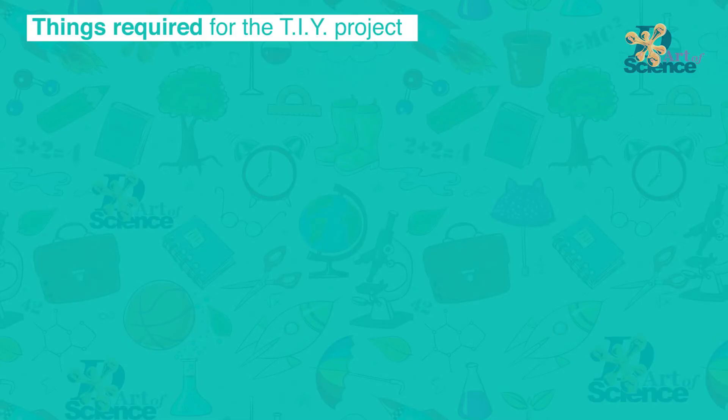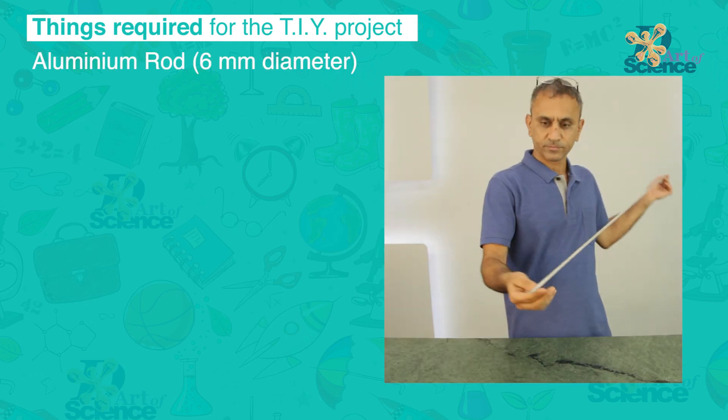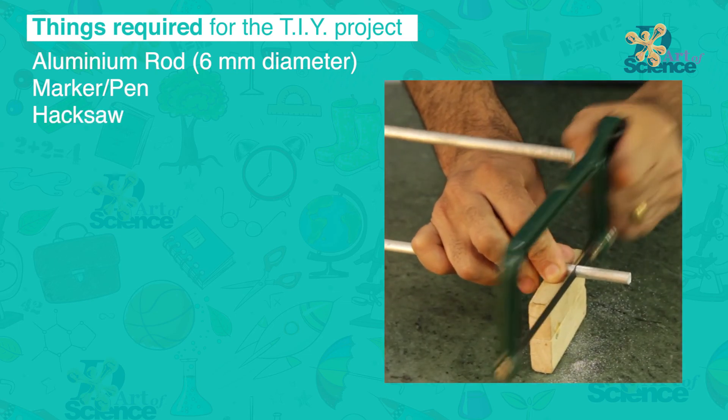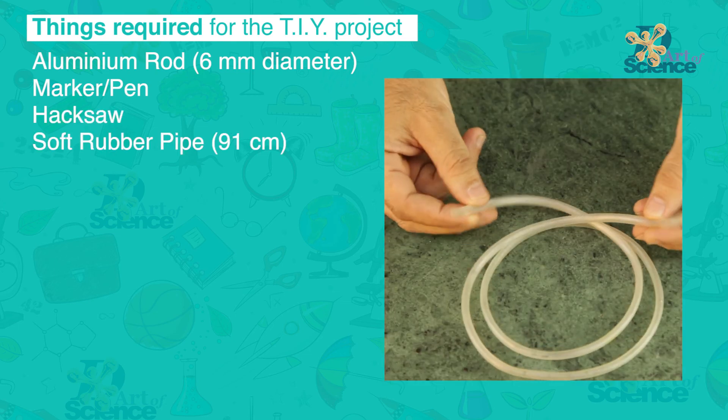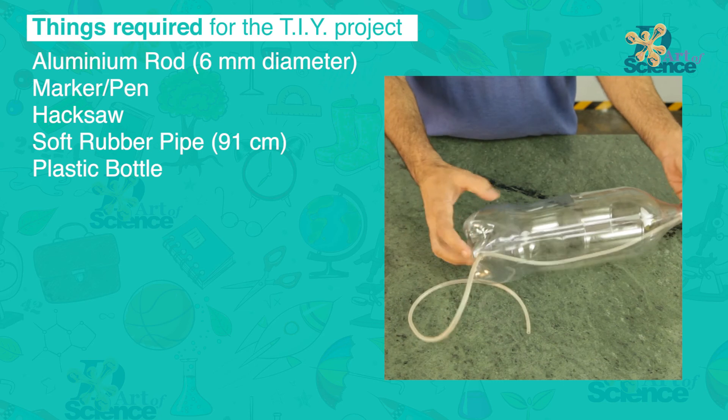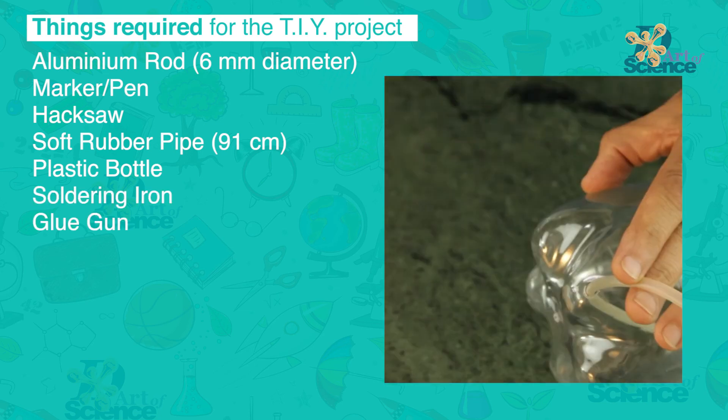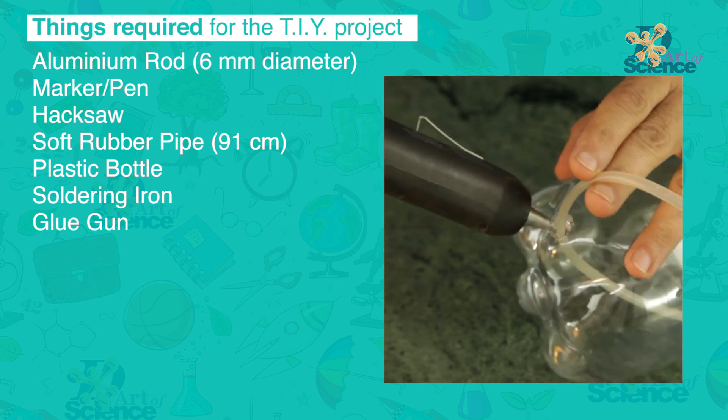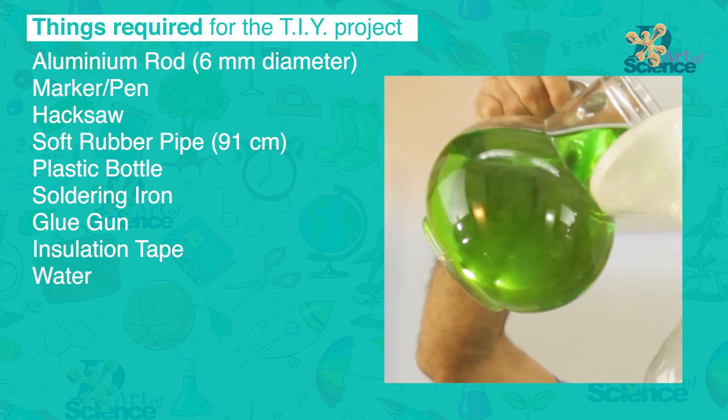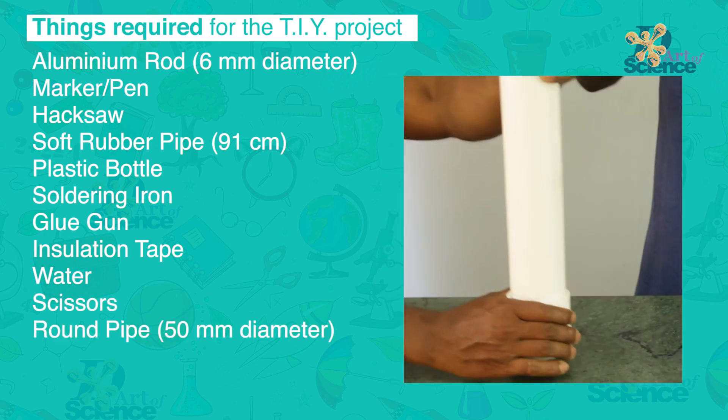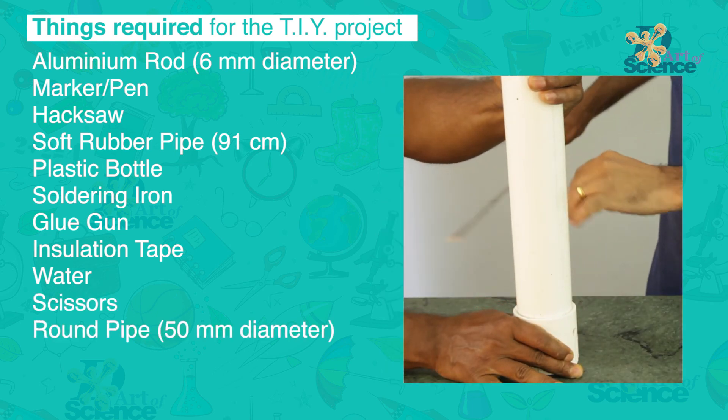Things required for the TIY project. Aluminium rod, around 6mm in diameter. Marker or a pen. Hacksaw. Soft rubber pipe, around 91cm long. Plastic bottle. Soldering iron. Glue gun. Insulation tape. Water. Scissors. Round pipe. Around 50mm diameter.